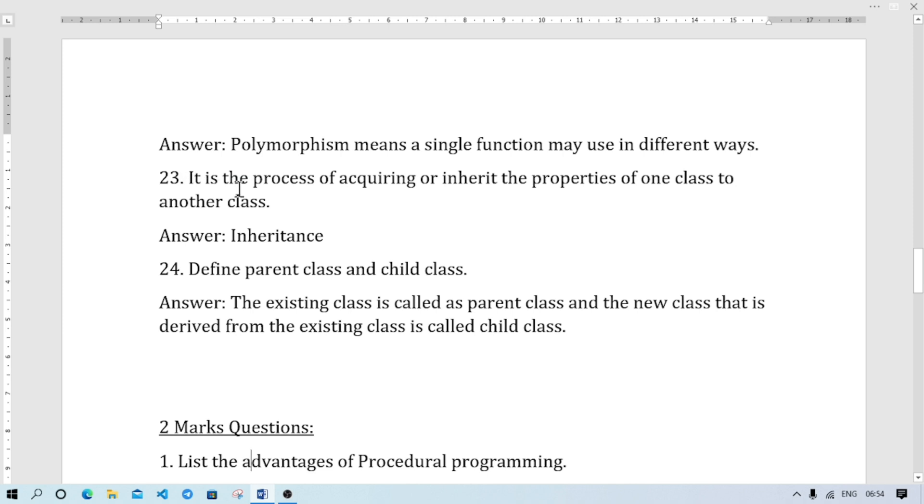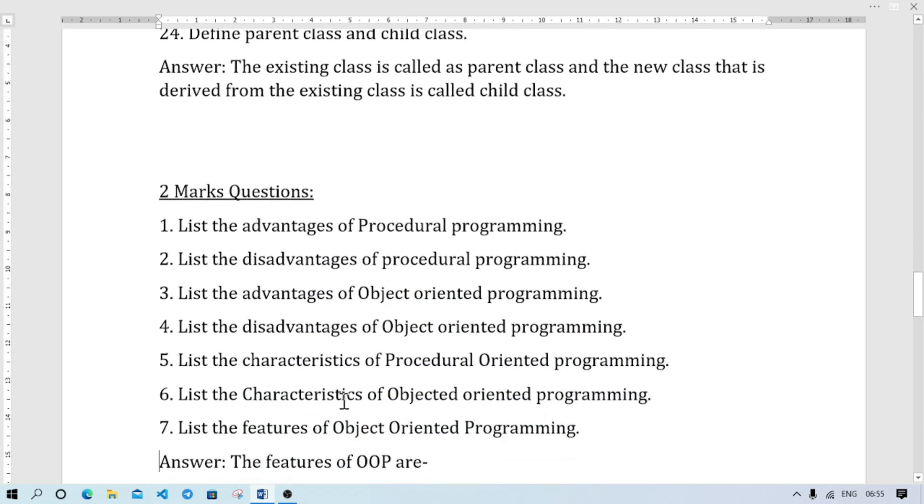Number 23: It is the process of acquiring or inheriting the property of one class to another. It is inheritance. In inheritance there are terms: parent class and child class. When the child class is derived from the parent class.